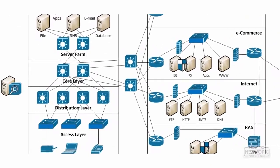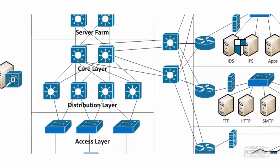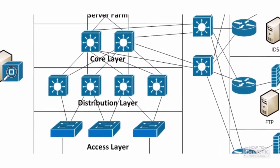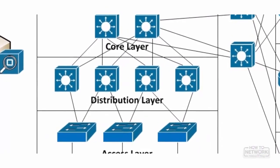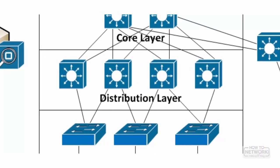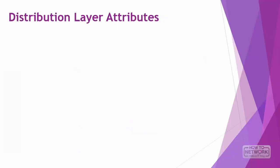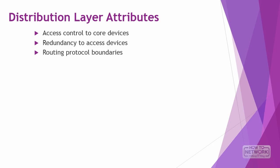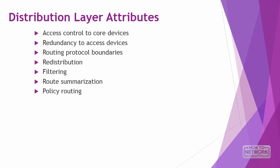The distribution layer has redundant connectivity to both the access and core layers. The distribution layer is often where the brains of the network reside, since many decisions such as filtering, quality of service, and policy-based routing are performed there. The distribution layer normally has advanced Layer 3 switches that can support a wide array of functionality. Attributes include access control to core devices, redundancy to access devices, routing protocol boundaries, redistribution, filtering, route summarization, policy routing, and security implementation.